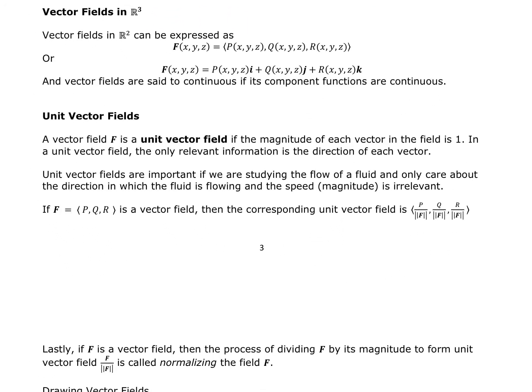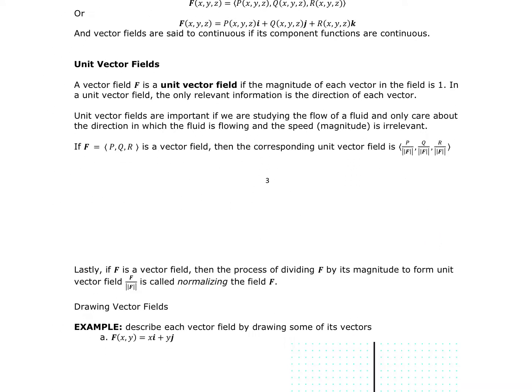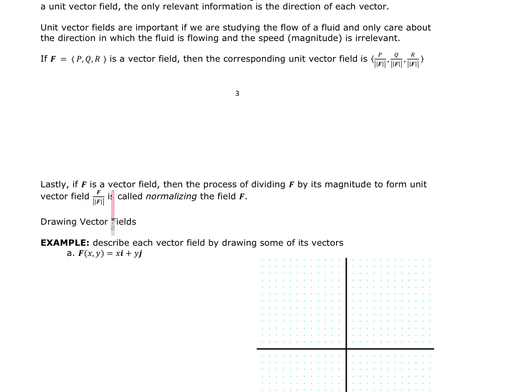Just like when we first learned vectors, we can talk about the unit vector field. If the magnitude of each vector in the field is 1, then unit vectors carry only directional information — the magnitude doesn't matter. They're important when talking about a fluid and we only care about the direction of flow, such as air or water, but not how strongly it's flowing. So for a vector field F with components P, Q, and R, the corresponding unit vector field divides each component by the magnitude of F. The process of dividing F by its magnitude into unit form is called normalizing the field.